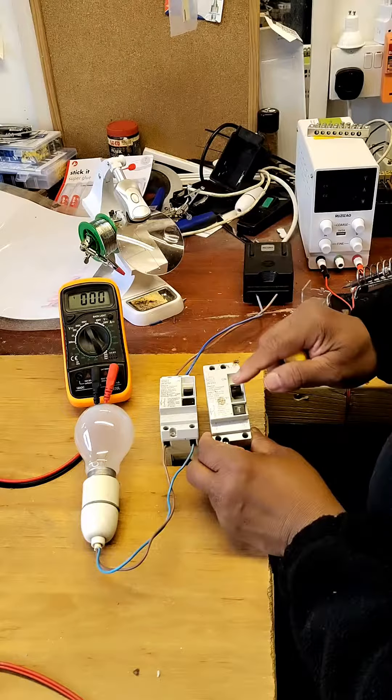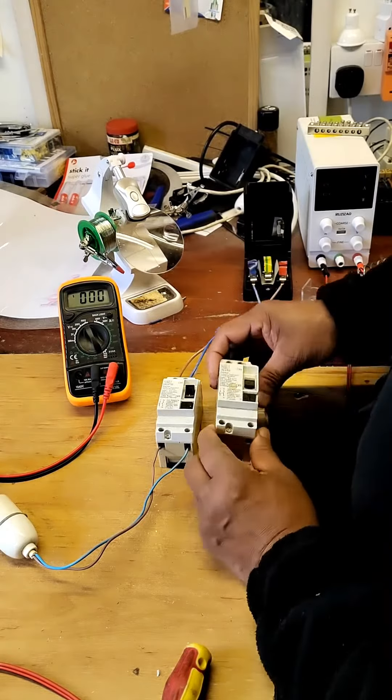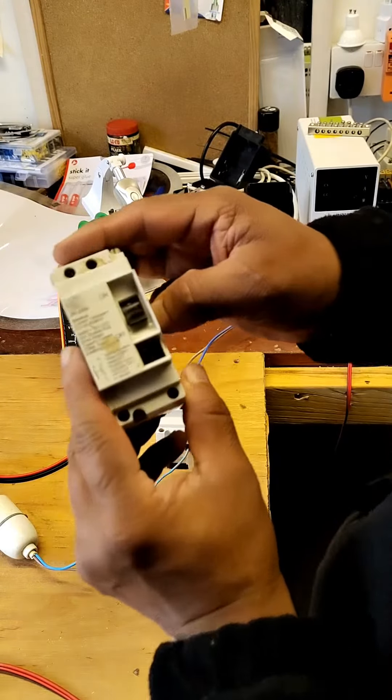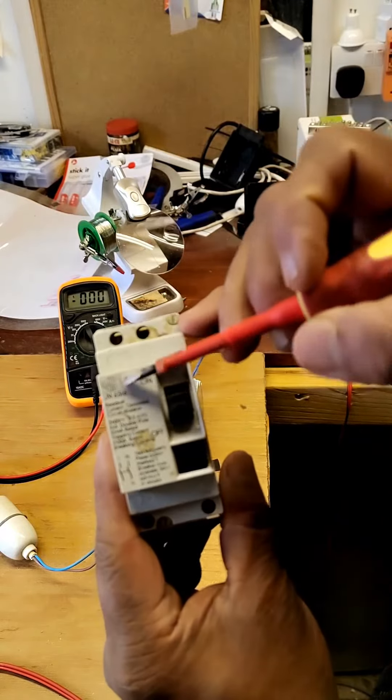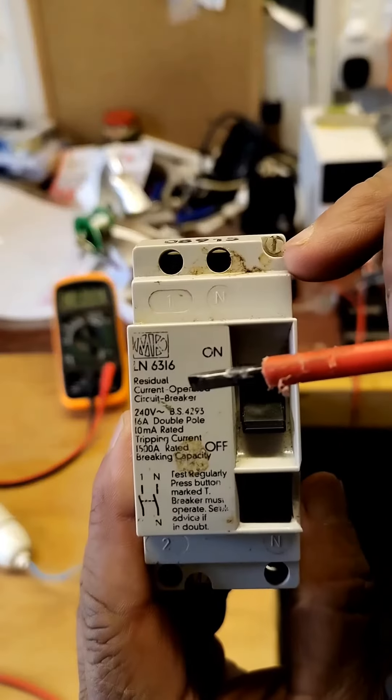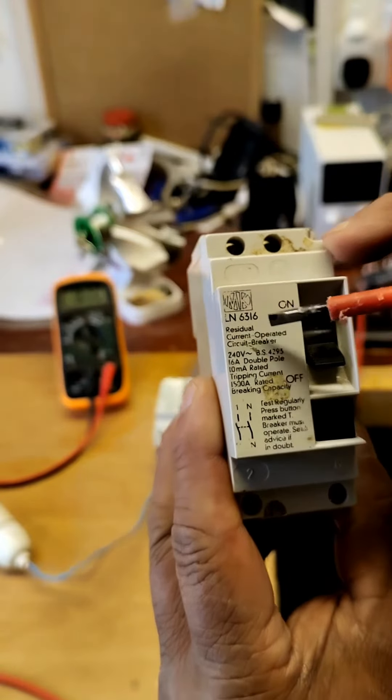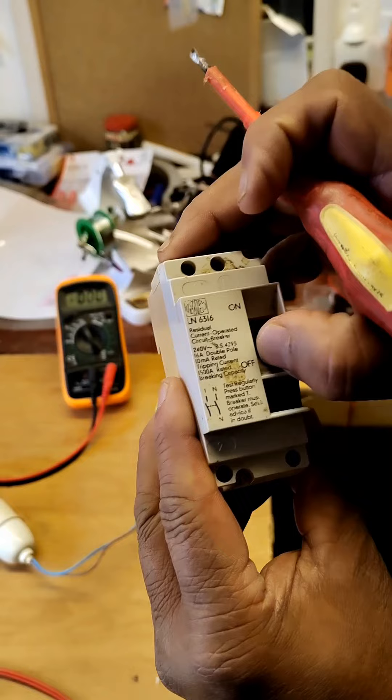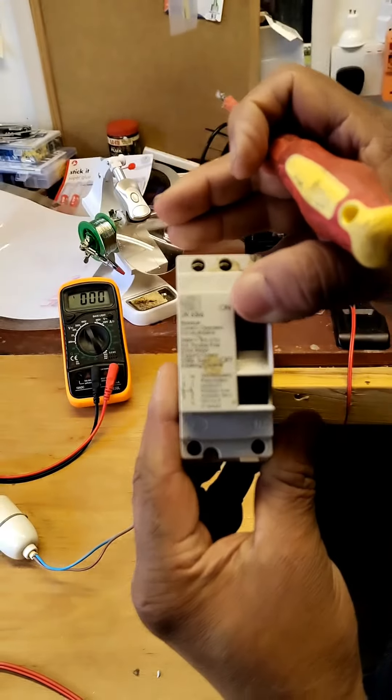This one is actually not working properly. So this is a 30 milliamp leakage current device. Once there is 30 milliamps of leakage, it trips out. It's supposed to be. So this is not working as you can see.